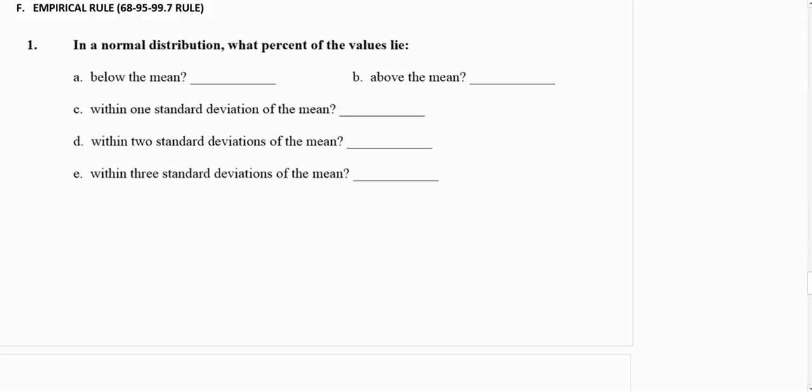In a normal distribution, the percent of values that lie below the mean... I'm going to draw our distribution. Here's a normal distribution. 100% fills in everything below that distribution. The mean is right in the middle, and if we cut that in half, you've got 50% on the left side, 50% on the right side. So 50% of the data below the mean and 50% of the data above the mean.